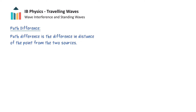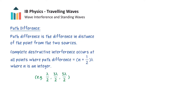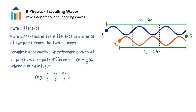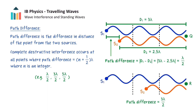There is a similar condition on the path difference which gives destructive interference. In particular, complete destructive interference occurs at all points where the path difference is equal to any integer plus one-half times the wavelength. So let's consider the same two sources emitting waves of wavelength lambda in phase, and focus on point Q. The distance from source 1 is 3 wavelengths and the distance from source 2 is 2.5 wavelengths, which results in a path difference of lambda over 2. Notice here that the troughs of the wave from source 1 align with the crest of the wave from source 2, so the two waves are out of phase and will interfere destructively. Another example of destructive interference is given below, where the path difference is equal to 1.5 lambda.